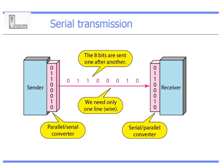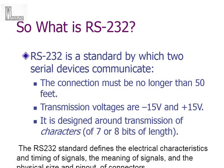What is RS-232? RS-232 is a standard by which two serial devices communicate. The connection must be no longer than 50 feet. The transmission voltages are approximately minus 15V and plus 15V — minus 15V for logic 1, plus 15V for logic 0; it is negative logic. It is designed for transmission of characters of either 7-bit or 8-bit in length. The RS-232 standard defines electrical characteristics, timing, meaning of signals, and the physical size and pin-out of connectors.